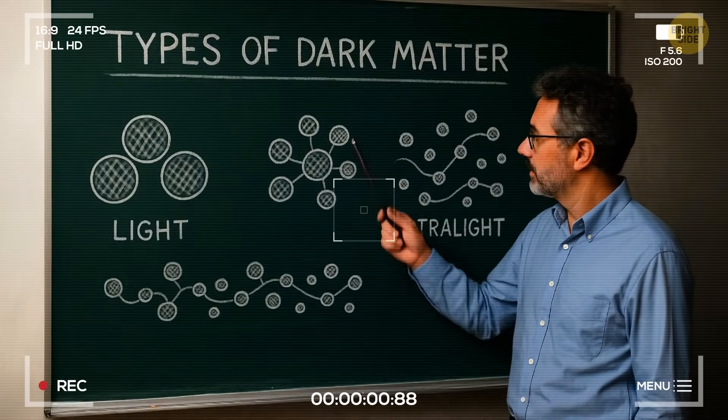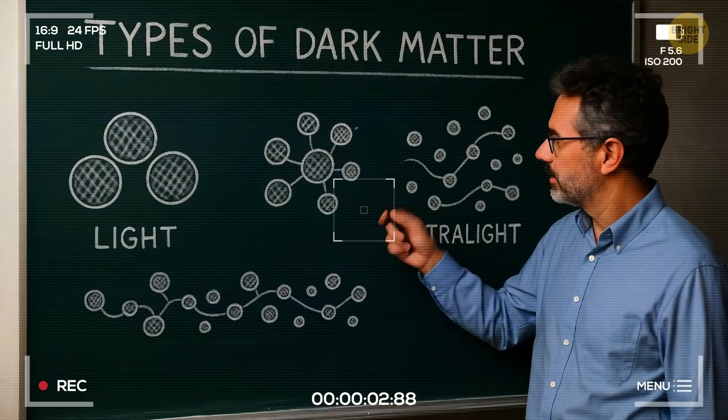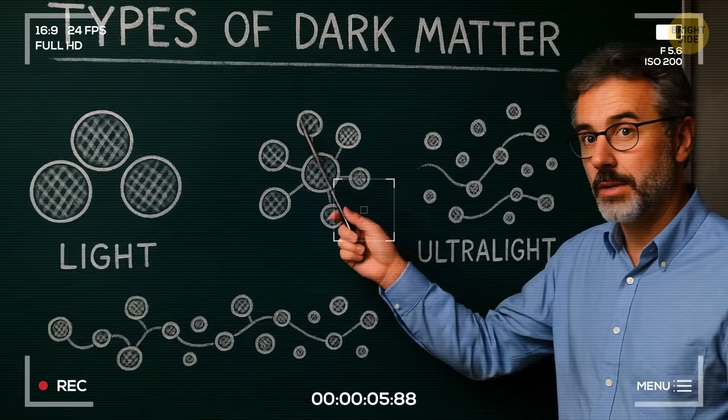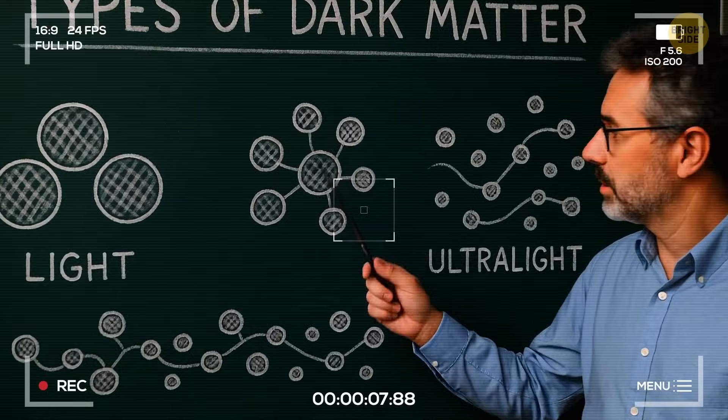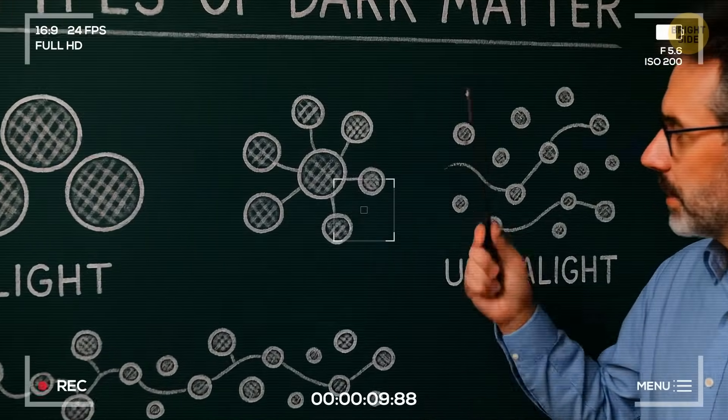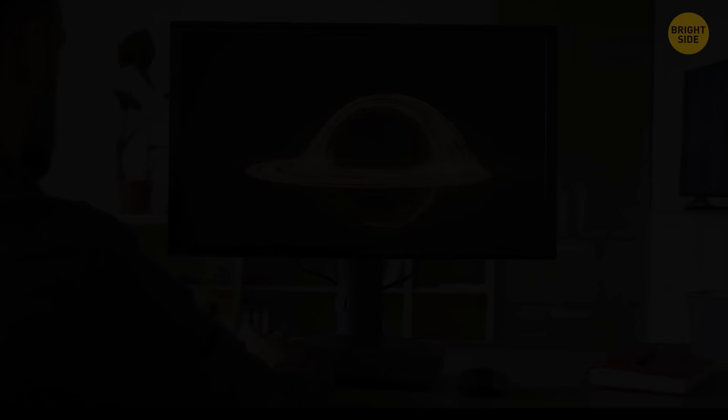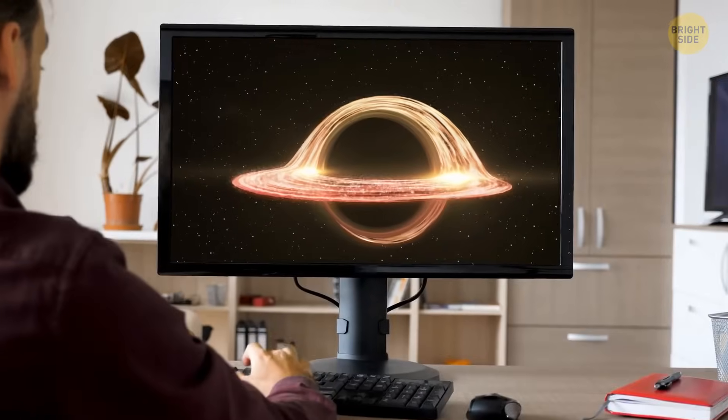Also, now they think that dark matter might consist not of one type, but many types of particles, just like our regular world. For example, light and ultralight dark matter. So, all this gave them yet another crazy idea. Exotic black holes.